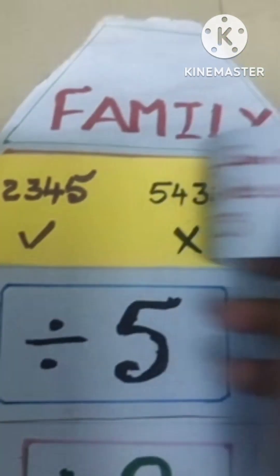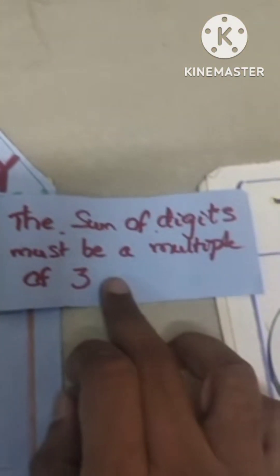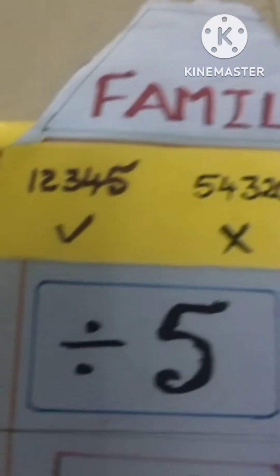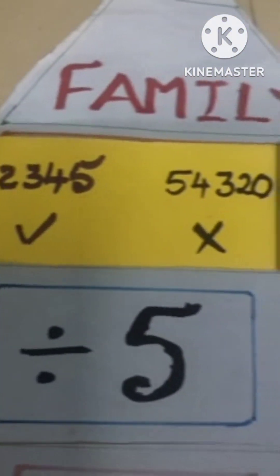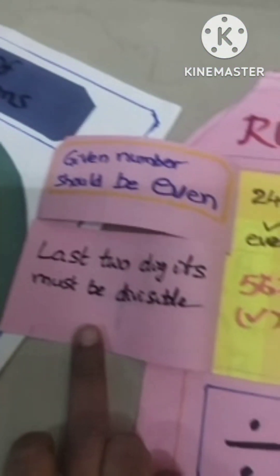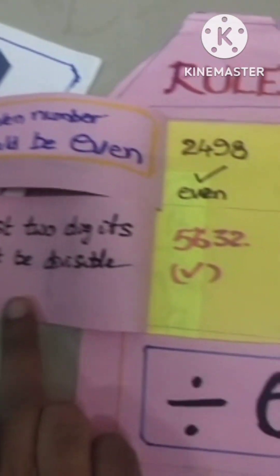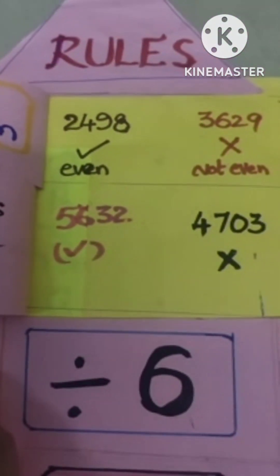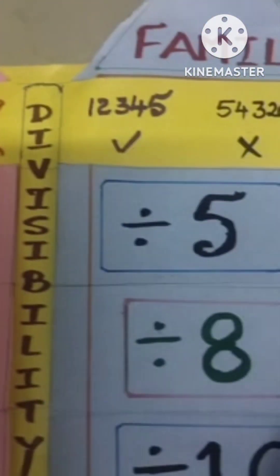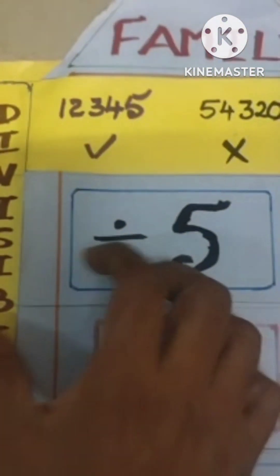Coming to number three: the sum of digits must be a multiple of three. Let us check — one, two, three, four, five — the sum of digits is divisible by three. Now coming to number four: the divisibility rule for four states the last two digits of the given number must be divisible by four.